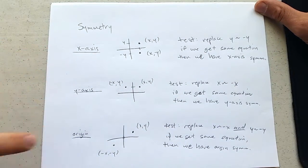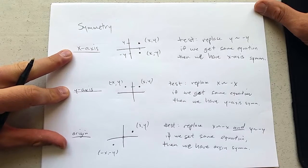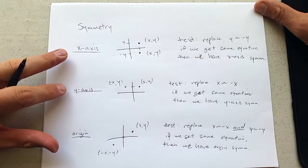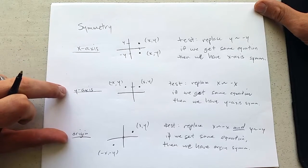Now these are related. If you have x-axis and y-axis symmetry, you get origin symmetry for free. But most of the time, we're only going to have y-axis or origin symmetry.